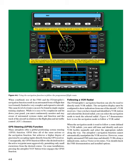GPS Steering (GPSS) Function. Many autopilots offer a GPS Steering (GPSS) function. GPSS does all of the same actions as the navigation function, but achieves a higher degree of precision by accepting inputs directly from the GPS receiver. The GPSS function follows the desired track to the active waypoint more aggressively, permitting only small excursions from the desired course. On some installations, pressing the Autopilot Nav button twice engages the GPSS function.